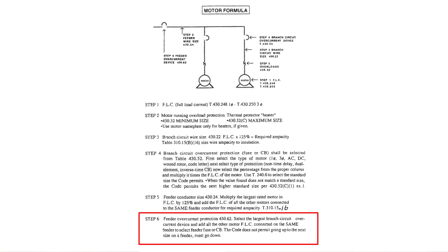Step number six cannot be done unless step number four has already been done — step six depends on step four. We're talking specific to a feeder, which means we've got multiple branches coming off. So, what does feeder overcurrent protection for step number six say?